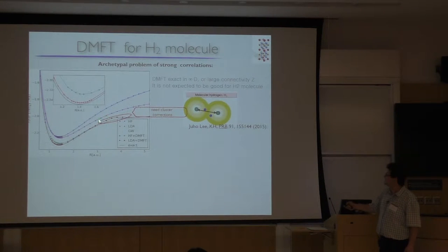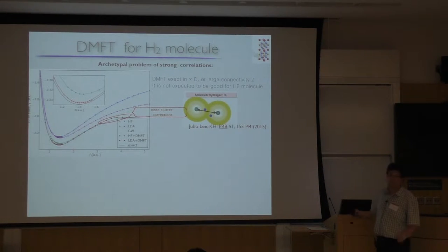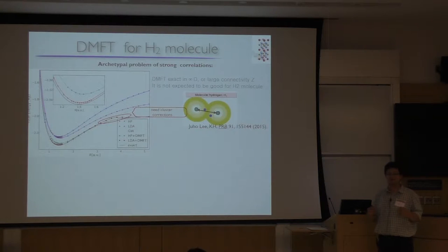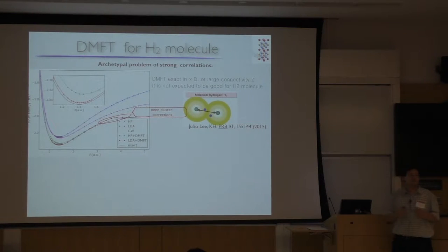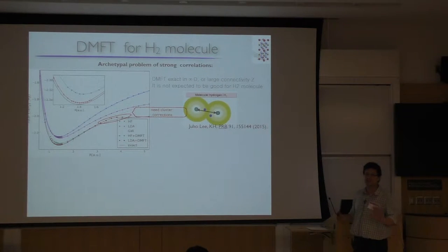There is a region where the molecule breaks — the bond-breaking point. It turns out that this is not so good; we get something like a Mott transition, a jump, which is not physical for a molecule. In a molecule, there is no Mott transition, so there is a breaking point where this approximation fails. That's the answer to how well DMFT works in problems which have bonds.